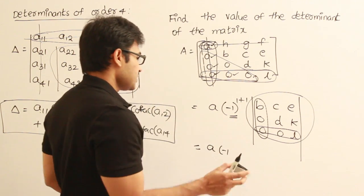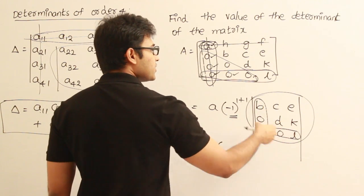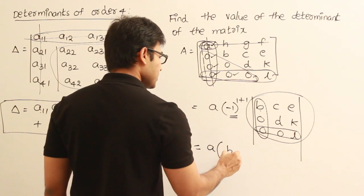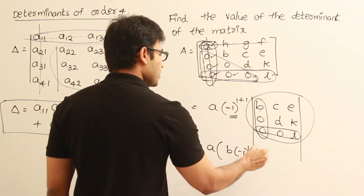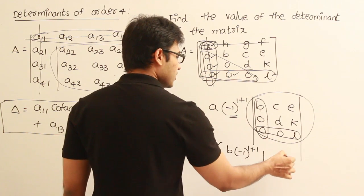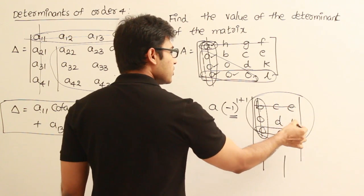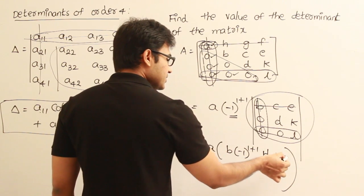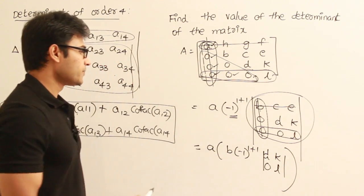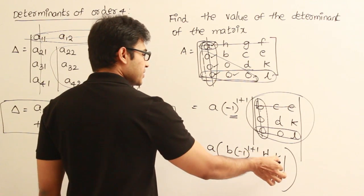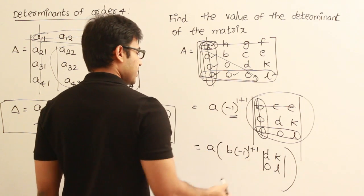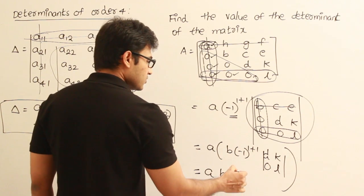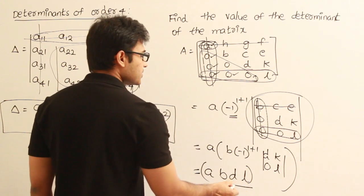Minus 1 to the power 1 plus 1 is plus 1, so we just continue. The determinant of the 3 by 3 becomes B multiplied by minus 1 to the power 1 plus 1, into the determinant of D, K, 0, L — which is a determinant of order 2. Computing that: take the principal diagonal product and subtract across the other. We get A into B into plus 1, then D into L minus 0, giving us A, B, D, L as the determinant value.